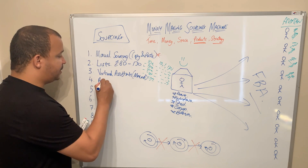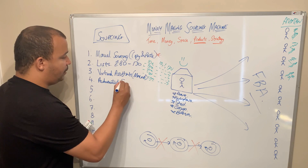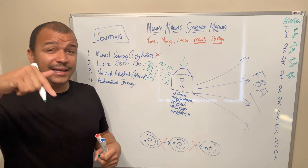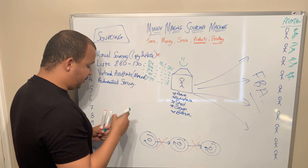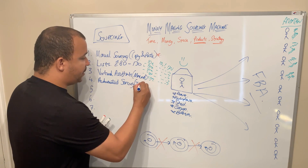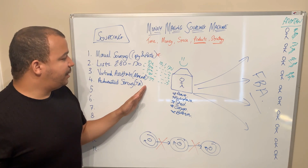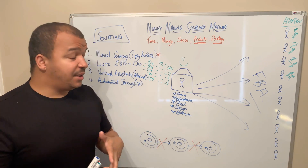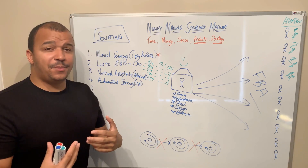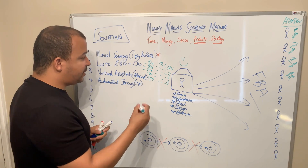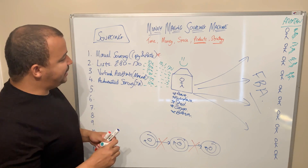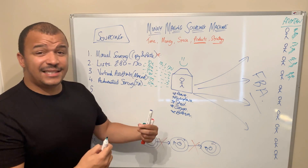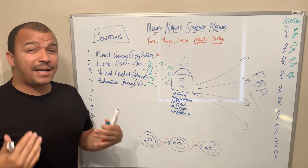The next thing is automated sourcing. You could be doing scans all the time. There's a 10-day TA scan link in the description. This could be something like Tactical Arbitrage, which you can use to scan products constantly. There are different options: Source Mogul, FB Wizard, and others. This could get you another 10 products per day. Can you see how we're building this system up? We're building 10, 20, 30, 40, 50, 60 — that's 60 products per day already, without you doing any manual copy and paste yourself.